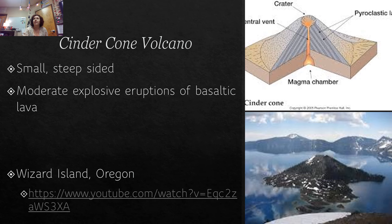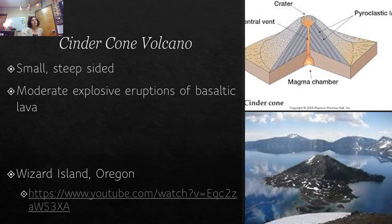Cinder cone volcanoes are what you picture when I say 'imagine a volcano.' These are the tall, steep ones with very explosive releases compared to the other types. It involves lighter basaltic lava. You typically find cinder cones around convergent boundaries. Wizard Island in Oregon is a great example of a cinder cone volcano. When you picture a volcano erupting, cinder cones are what you're thinking of.